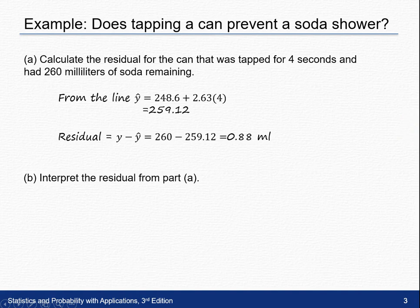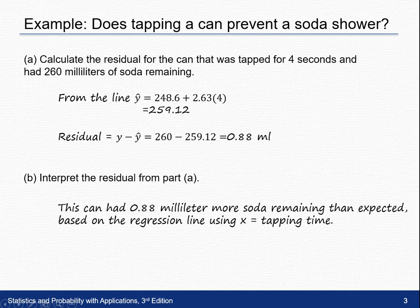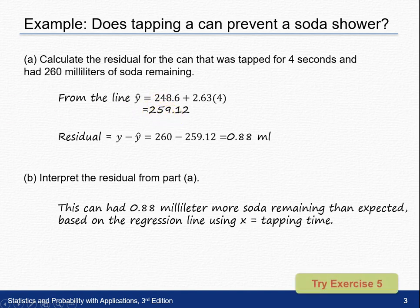In part B, we're asked to interpret this value. Remember, residuals can be positive or negative. Since our residual is a positive 0.88 milliliters, that tells us there was 0.88 milliliters more soda remaining than we had expected. We saw 260, but we only expected to see 259.12. For additional practice, please try Exercise 5.